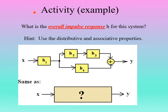Most of the remainder of this video consists of activities. Here's the first one: what is the overall impulse response h for the system shown? This system is a combination of series and parallel subsystems. The goal is to simplify all four subsystems and combine them into a single system with a given impulse response. You'll need to use the distributive and associative properties. Please pause the video and look back at the previous slides to see how to handle both series and parallel subsystems.